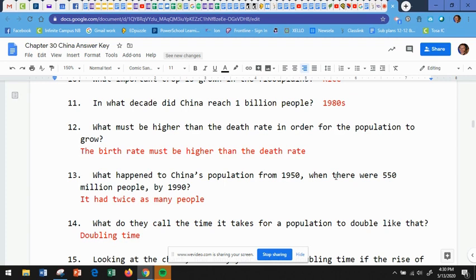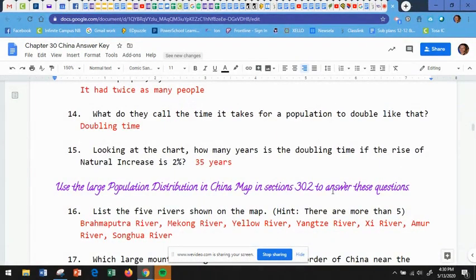Number 13, what happened to China's population from 1950 when there were 550 million people by 1990? Well, now it had twice as many people by 1990. Number 14, what do they call the time it takes for a population to double like that? Well, if it's doubling, they call it doubling time. That should be an easy one to remember. Number 15, looking at the chart, how many years is the doubling time if the rise of natural increase is 2%? And if you look at the chart and follow it over, it says 35 years.